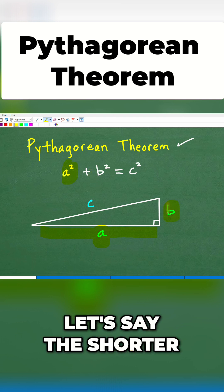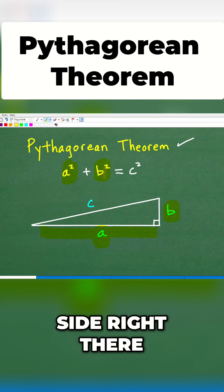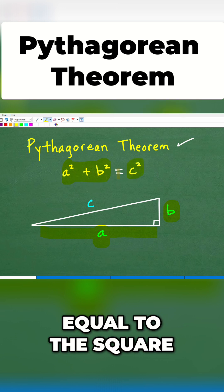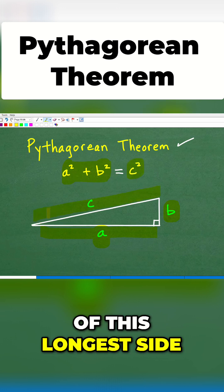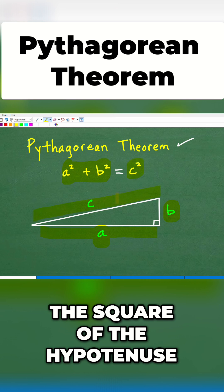and then we add it to the square of this, let's say the shortest side right there, that's going to be equal to the sum of these things. If I add these up, it's going to be equal to the square of this longest side, the square of the hypotenuse, right?